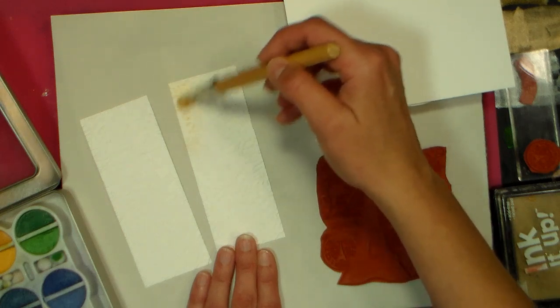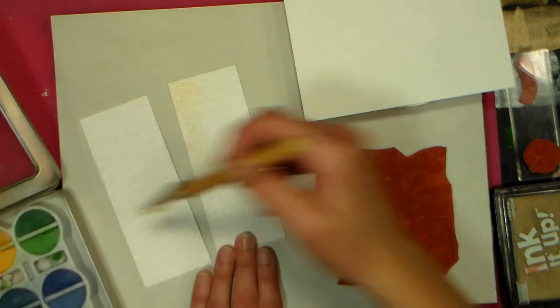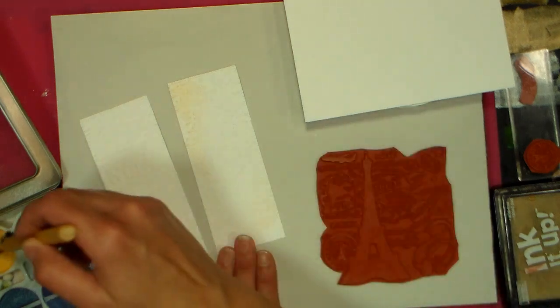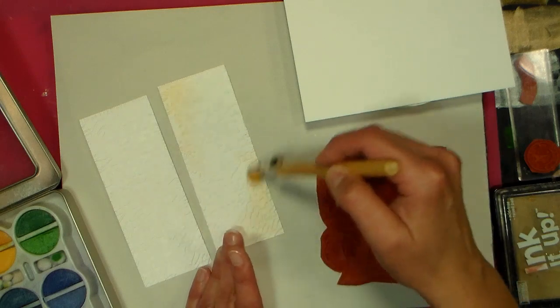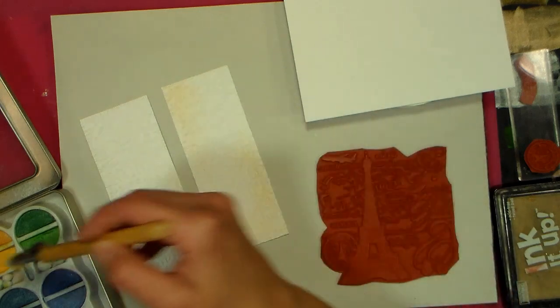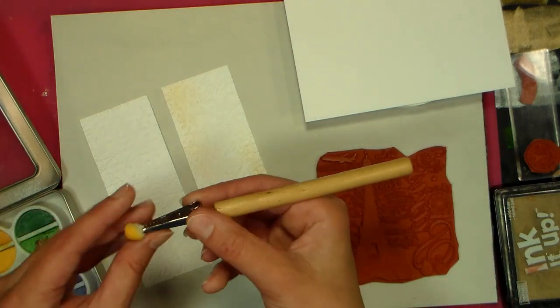You can rub an ink pad over this to color the raised areas, but you get such a nice soft look when you do it with chalk. This chalk happens to be pearly, so it's got a little bit of mica in there, so it shimmers a little bit, so that's really pretty. You can use regular plain chalks too.